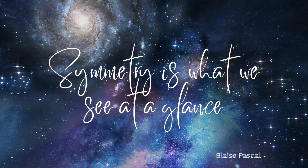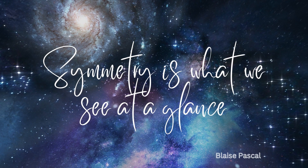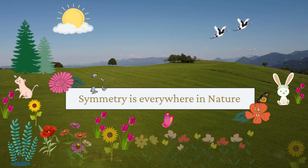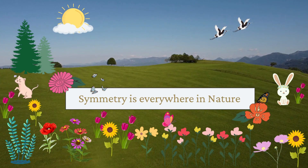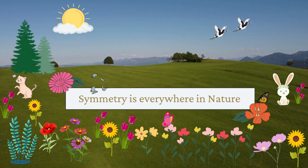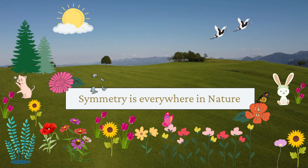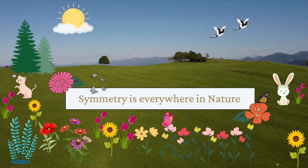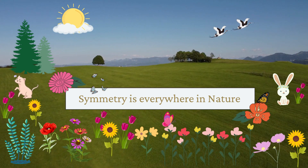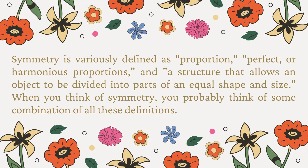Blaise Pascal once said, 'Symmetry is what we see at a glance.' Symmetry is everywhere in nature. It is variously defined as proportion, perfect or harmonious proportions, and a structure that allows an object to be divided into parts of equal shape and size.